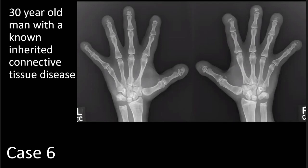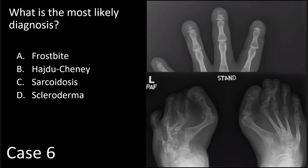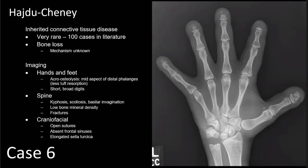Our next case is a 30-year-old man with a known inherited connective tissue disease. On these AP radiographs of both hands, we see acro-osteolysis of the distal phalanges of every finger bilaterally, predominantly centered in the shafts of the distal phalanges with fairly well-defined horizontal clefts of bone loss. We also see that the metacarpals are short relative to the proximal phalanges, the carpi have a squared-off configuration, the distal radioulnar joint spaces are widened, the distal ulnae are mildly deformed, and the fingers are short and broad. In this patient with acro-osteolysis, what is the most likely diagnosis? This is one of those extremely rare entities — Hajdu-Cheney syndrome.